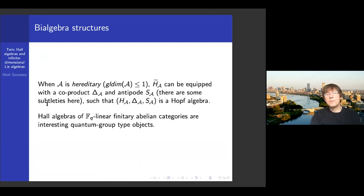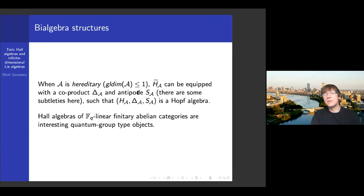For coalgebra structures things become more subtle. If A happens to be hereditary — meaning the global dimension of A is at most one — then you can equip this with a coproduct and an antipode and get a Hopf algebra. In some cases this will be something like a topological Hopf algebra because the coproduct might land in a completion, but roughly speaking you get a Hopf algebra — but only in this nice case where global dimension is at most one.